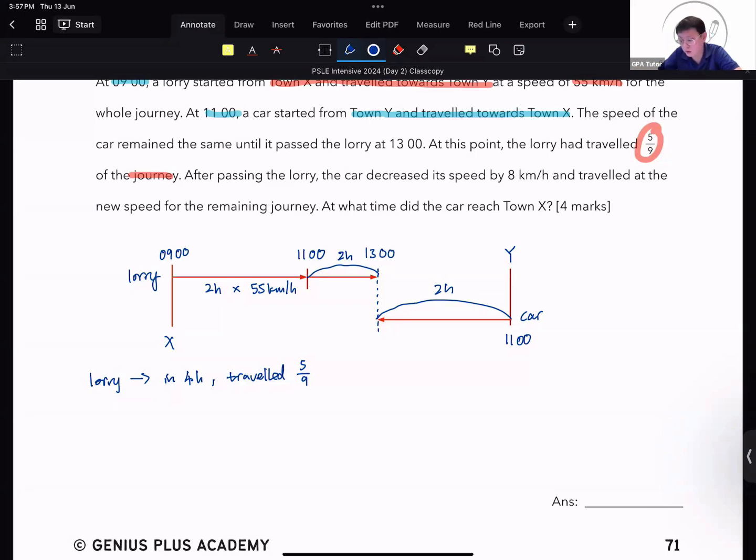Which means the car in 2 hours will have traveled the remaining 4 out of 9 of the journey. That's at the initial speed. That is what you must understand over here.